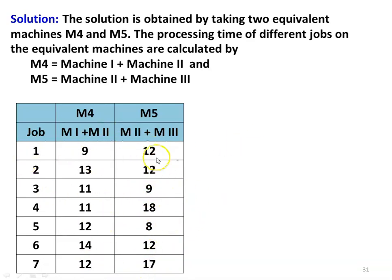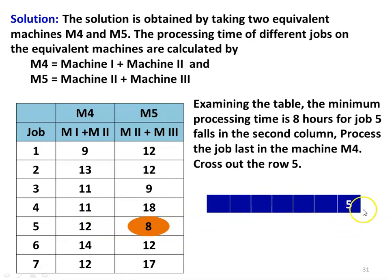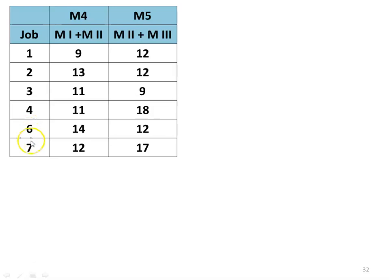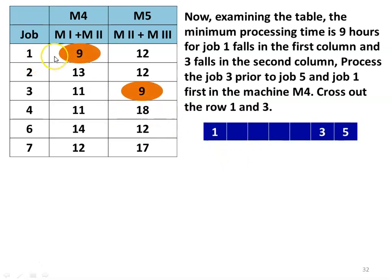Examining the processing table, the minimum time is 8 hours for job 5, falling on the second column. So job 5 is processed last in machine M4; the 5th row is deleted. Remaining: jobs 1, 2, 3, 4, 6, 7. Next minimum time is 9 hours — for job 1 it falls on the first column; for job 3 it falls on the second column. Job 1 is processed first in M4; job 3 is processed prior to job 5. Delete rows 1 and 3.